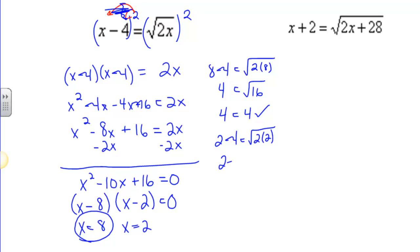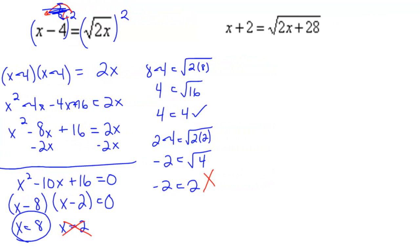2 minus 4 is negative 2 equals the square root of 4. The square root of 4 is only 2 — it's not negative 2. So this does not work, and I put a big fat red x there. This is an extraneous solution, and that happens from time to time. So x equals 8 is our only solution.